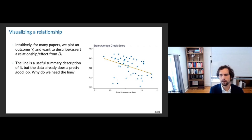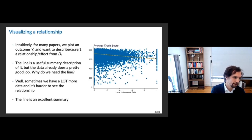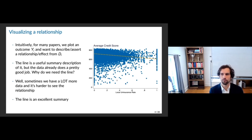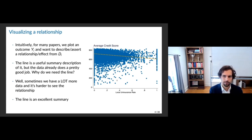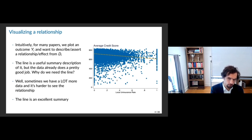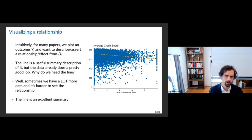Why would we need the line? Once you start getting into a lot more data, it starts to get hard to see the relationship we're interested in. This is the zip-code-level version of the same regression. I think if I hadn't put the line there, you would have a lot of trouble seeing anything in that underlying data — because we have so much more variability. There are a lot of features related to credit score above and beyond the uninsurance rate. So it's important to have a line summary to explain what's going on.